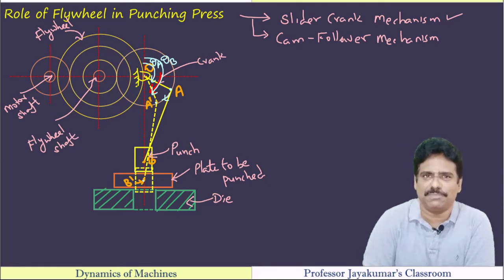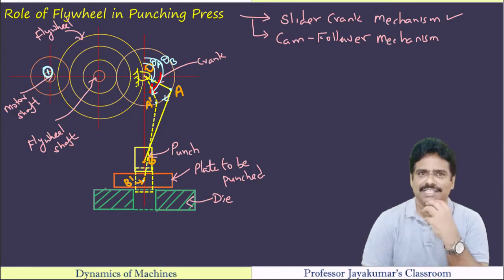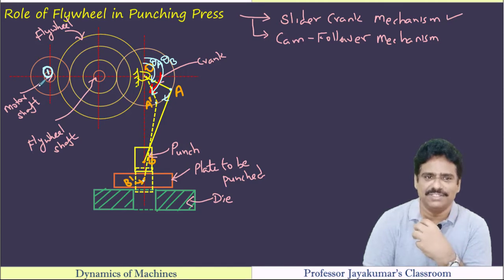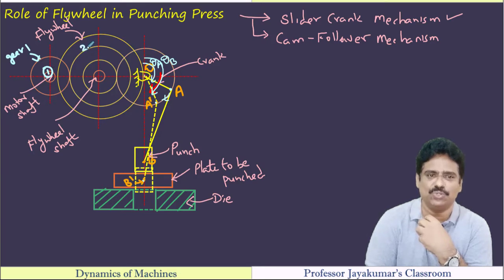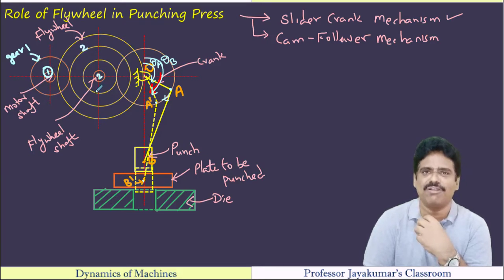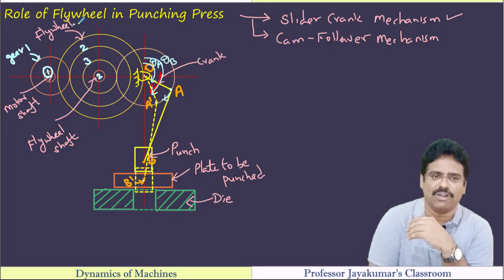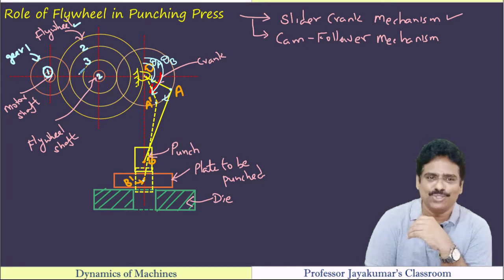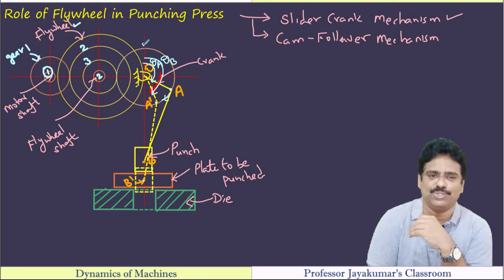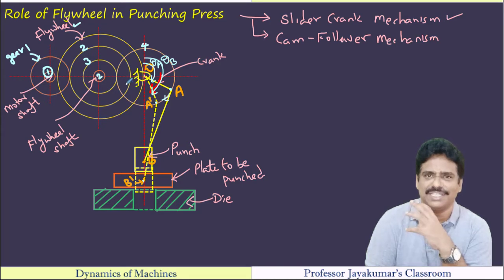Let us understand the basic arrangement of the punching press. This is shaft number one, which I call the motor shaft. There is an electric motor mounted on this shaft. That shaft has gear one, which engages with gear two. Gear two is mounted on shaft two, which I call the flywheel shaft, because on that shaft we have gears two and three and also a flywheel. The power obtained at gear three is transmitted to gear four, which in turn operates the slider crank mechanism.